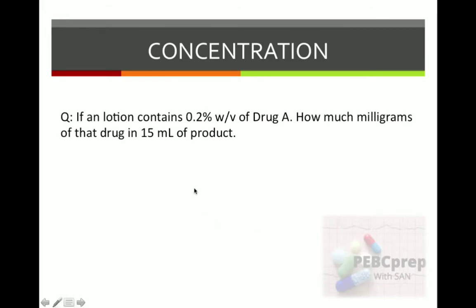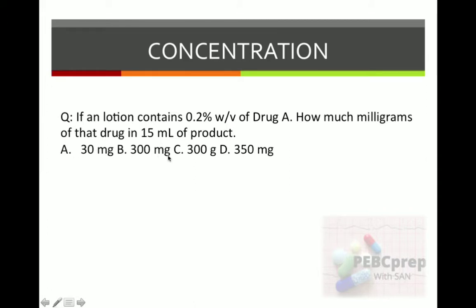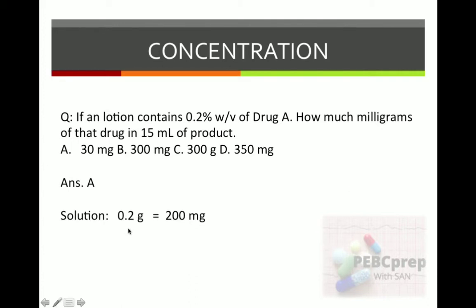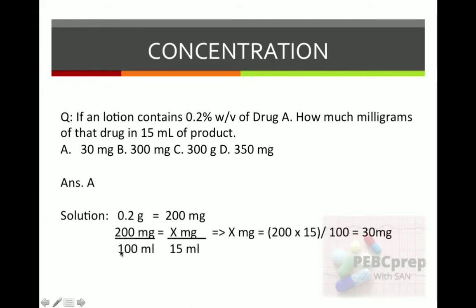Another example: if a lotion contains 0.2 percent weight by volume of a drug, how many milligrams of that drug are in 15 ml of product? Options: A) 30 mg, B) 300 mg, C) 300 grams, D) 350 mg. The answer is A. Similarly: 0.2 g = 200 mg. So 200 mg over 100 ml = X mg over 15 ml. X = 200 × 15 ÷ 100 = 30 milligrams.